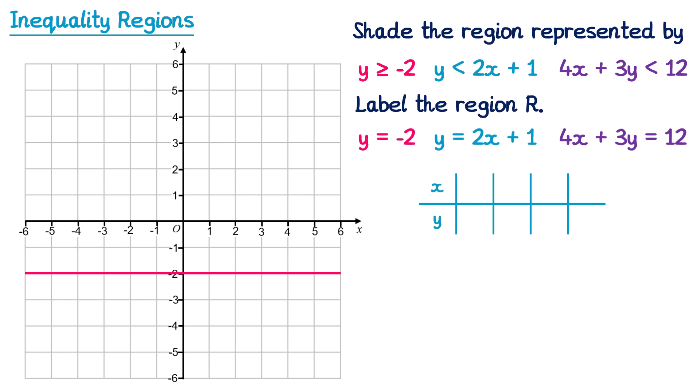Choosing x values 0, 1, 2, 3 gives y values of 1, 3, 5, and 7 from y = 2x + 1. I then plot the points (0,1), (1,3), (2,5) — the point (3,7) doesn't fit on the diagram but that's fine. As long as you've plotted at least 2 points you can draw the line; 3 is better to check for mistakes. The inequality was y < 2x + 1, so I draw a dotted line through these points.